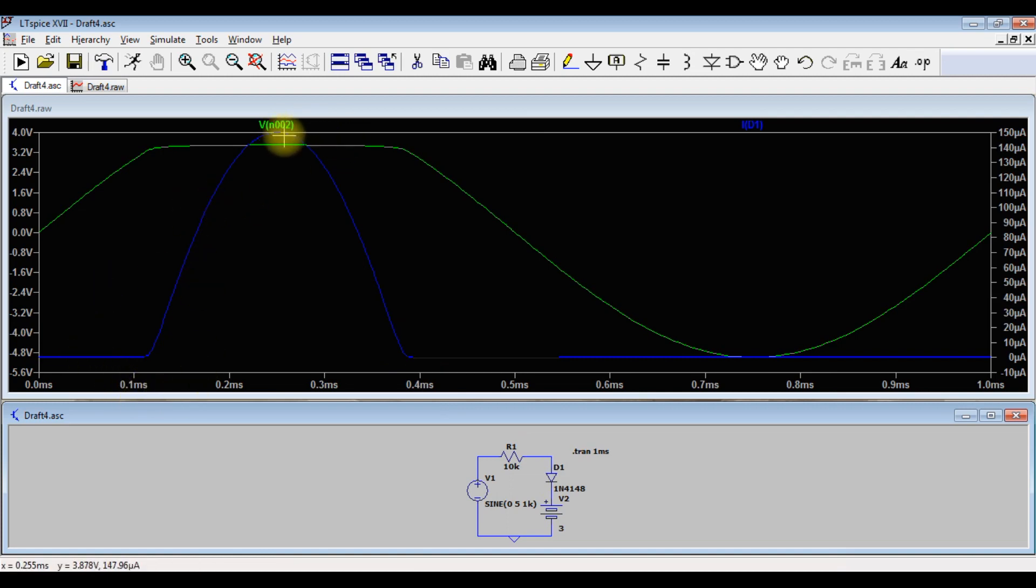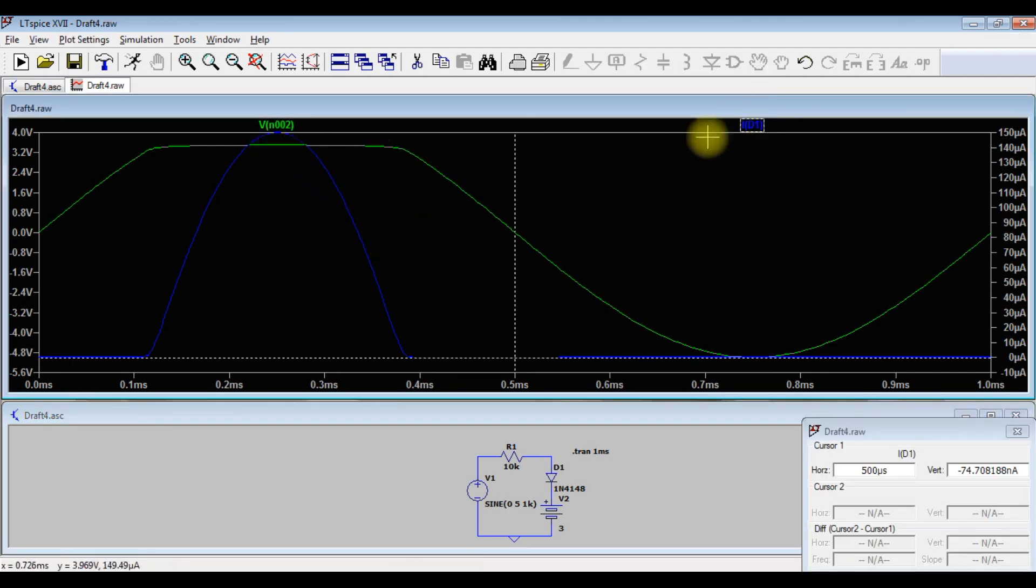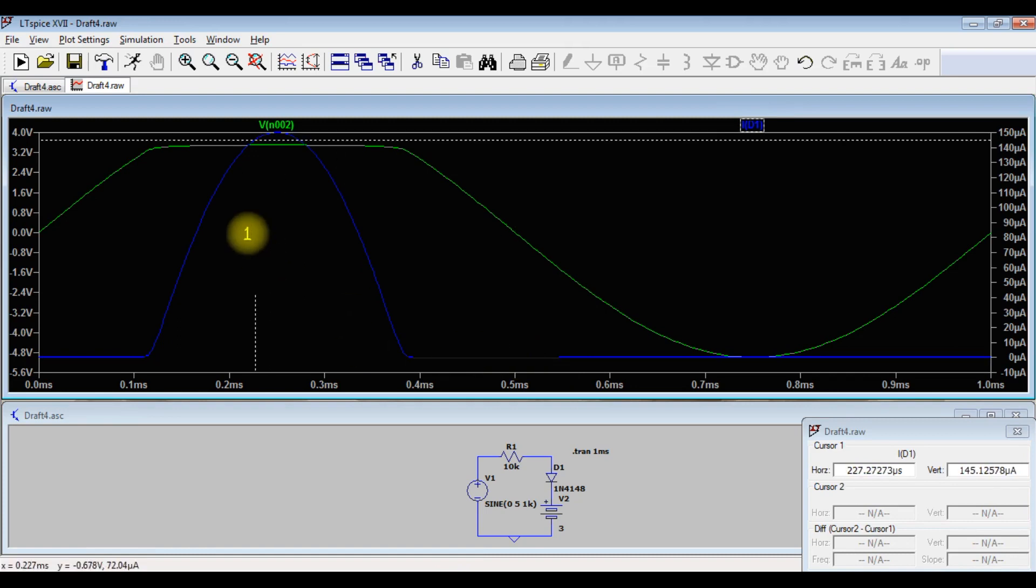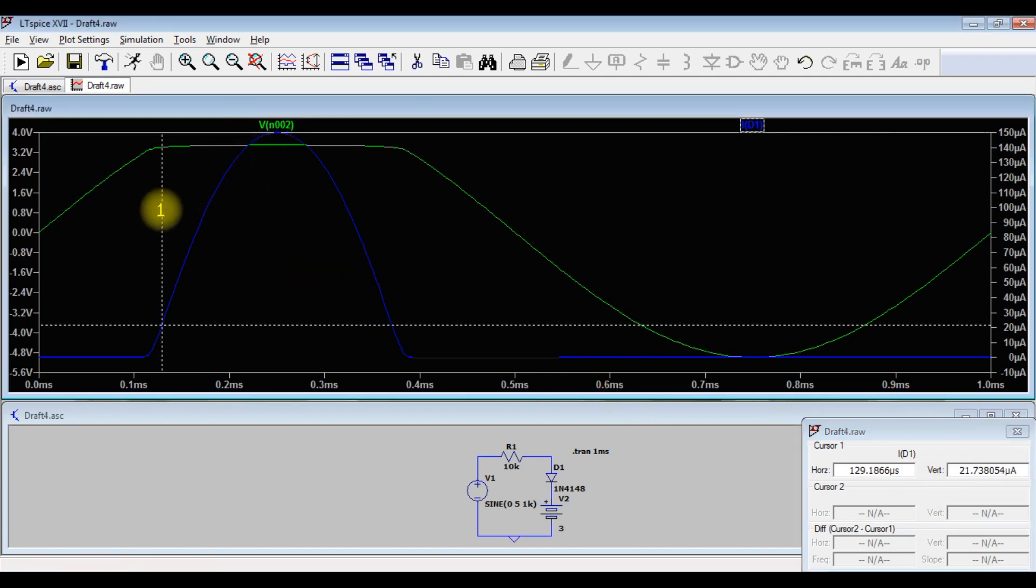It is approximately 150 micro amps. As we can see here, the axis is on the right side. The current is approximately 150 micro amps, 0.5 volts, approximately 0.1 millisecond and 0.4 millisecond.